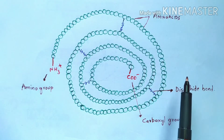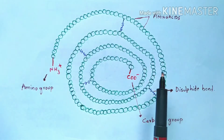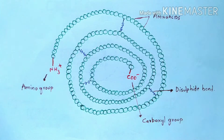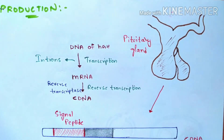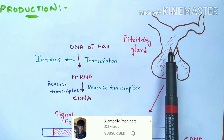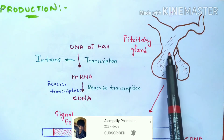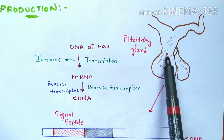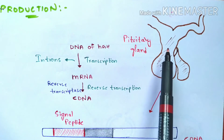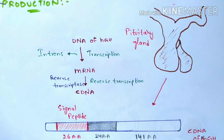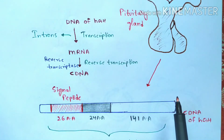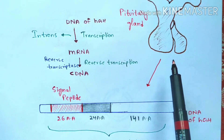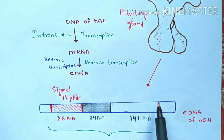Now let us discuss the production of growth hormone using rDNA technology. Consider the pituitary gland, from which the growth hormone is naturally produced. We are going to extract the cDNA of human growth hormone from this pituitary gland. However, the cDNA cannot be extracted directly — it is not possible to extract it straightaway.